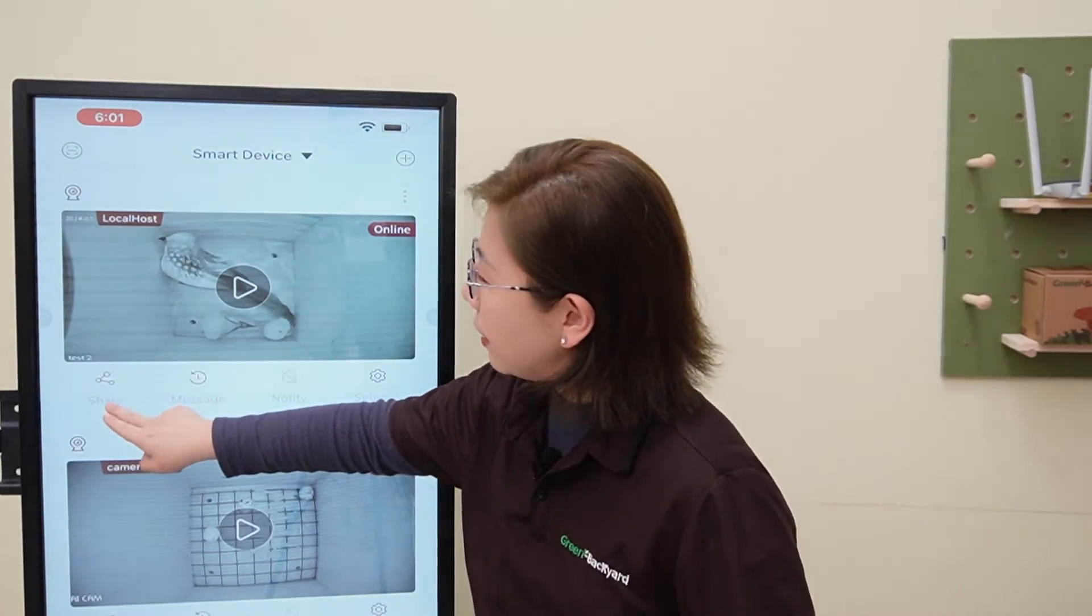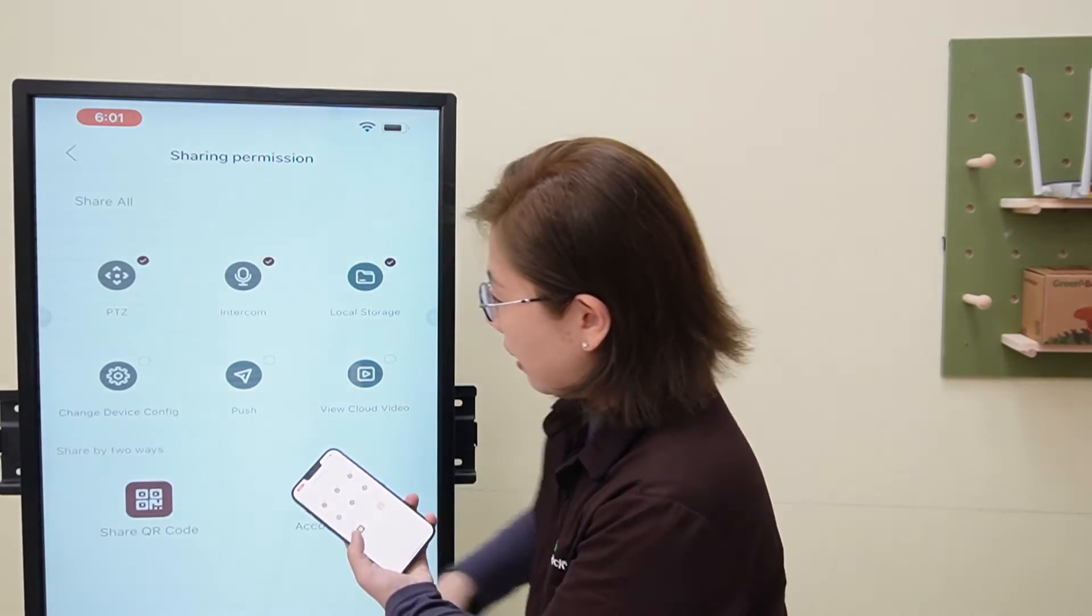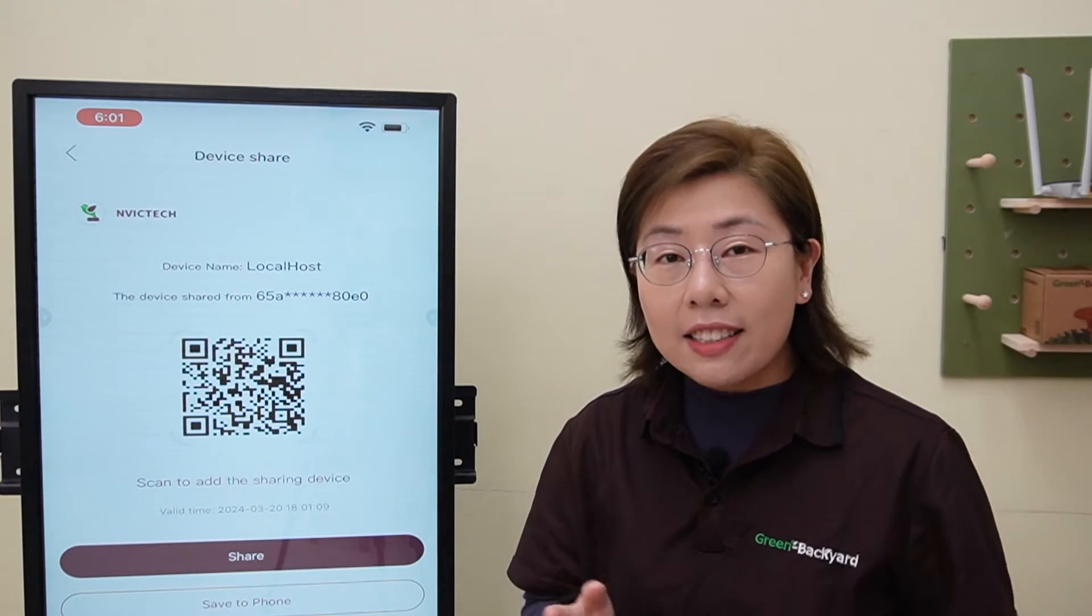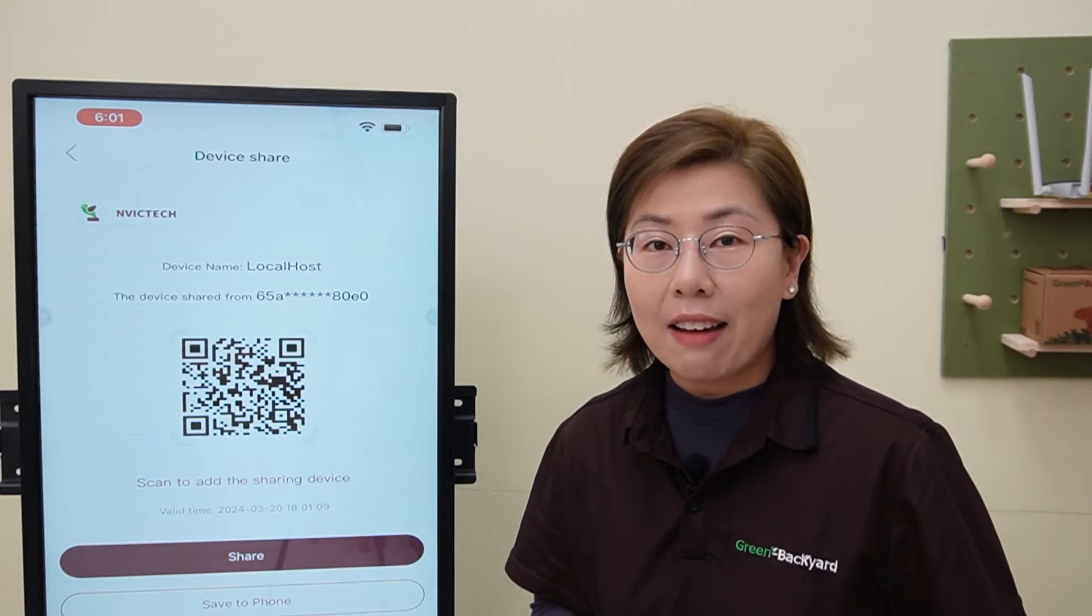Under your device, you can see the share button. Just tap on it. And you'll see the QR code. Voila. Now, they can instantly connect it to your bird box camera and see the live feed together.